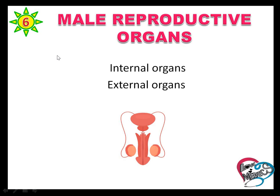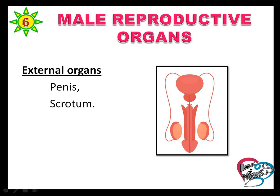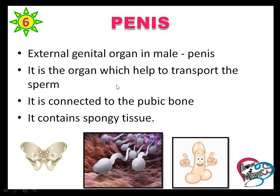Testosterone is also responsible for the development of male characteristics: muscle mass, strength, fat deposition, bone mass, facial hair growth, and voice change. The male reproductive organs include internal organs and external organs. Internal organs are the testes, epididymis, vas deferens, and accessory glands — seminal vesicles, prostate, and bulbourethral gland. External organs are the penis and scrotum.